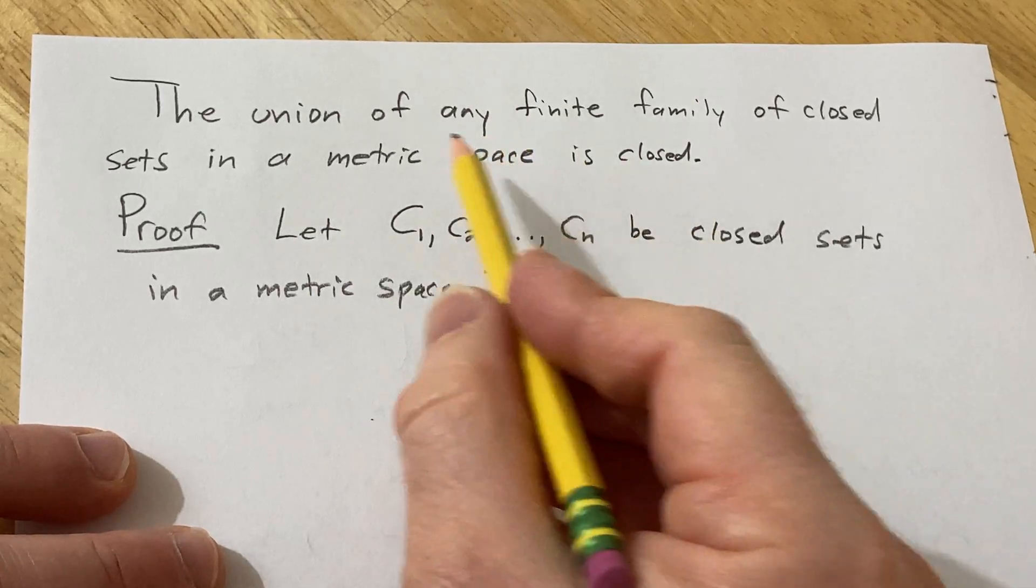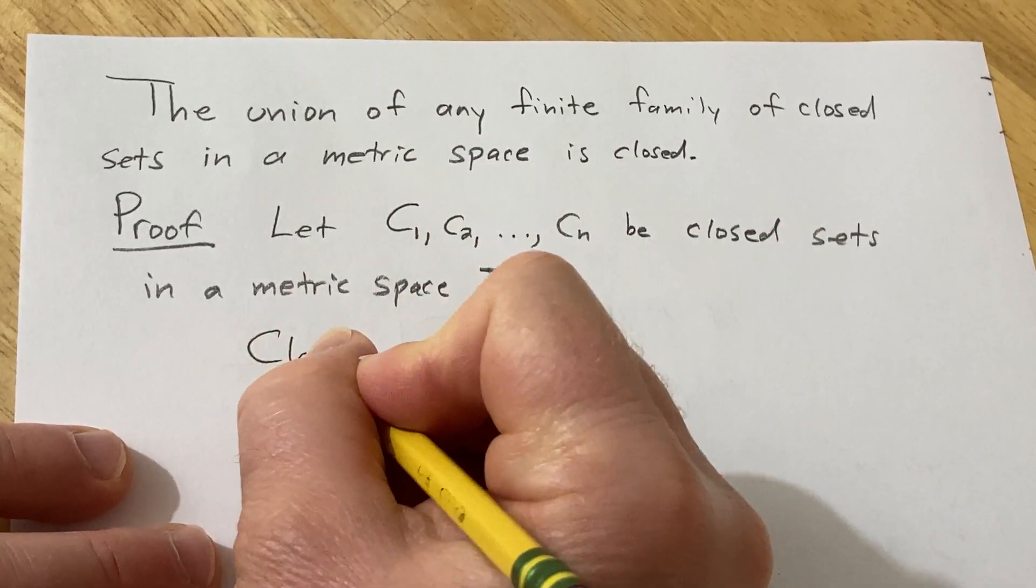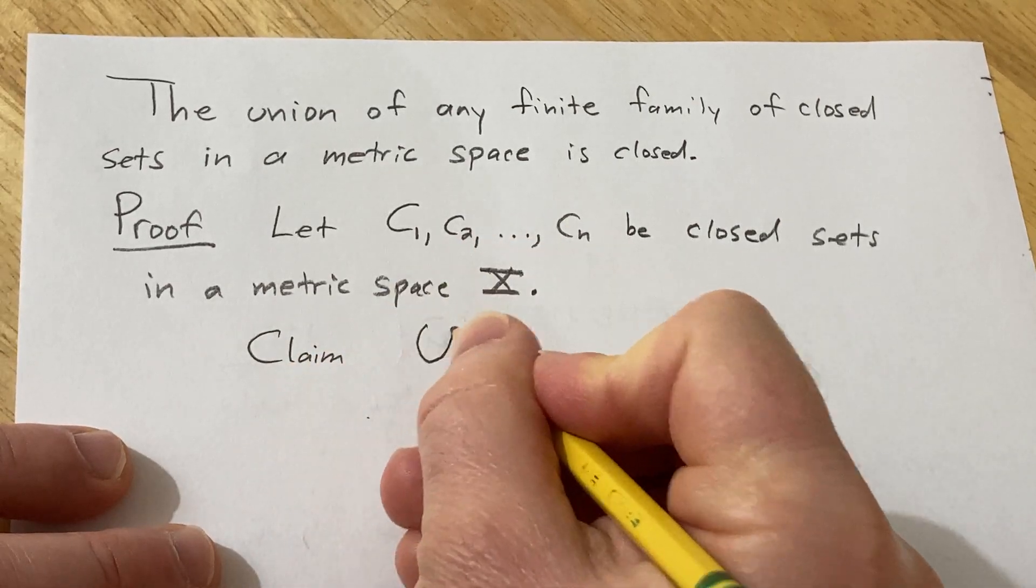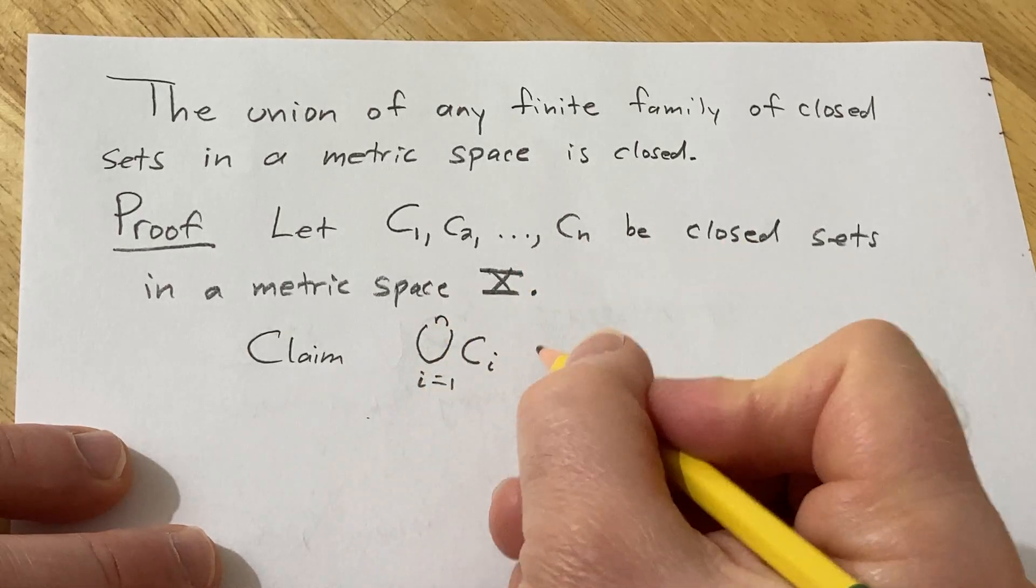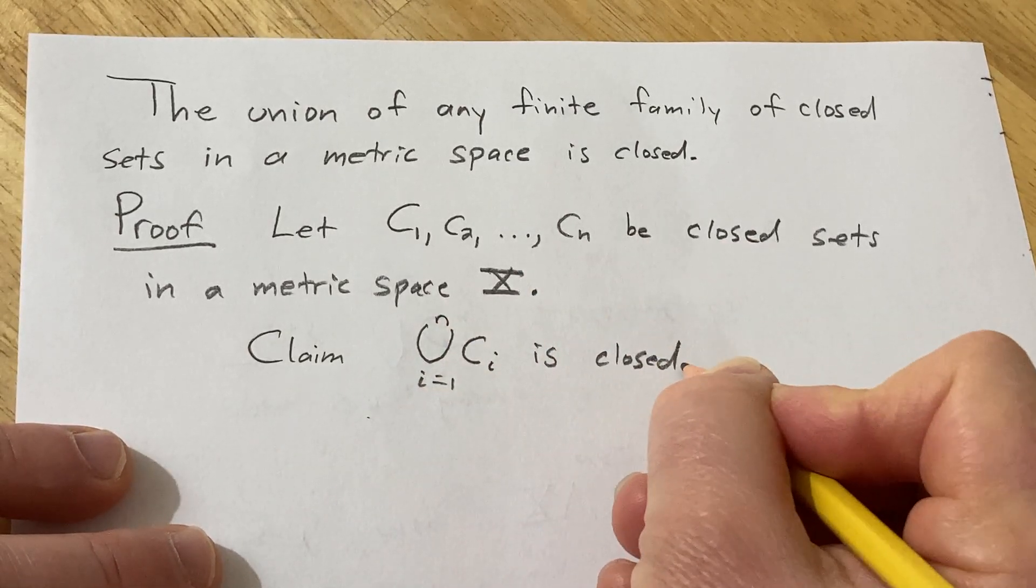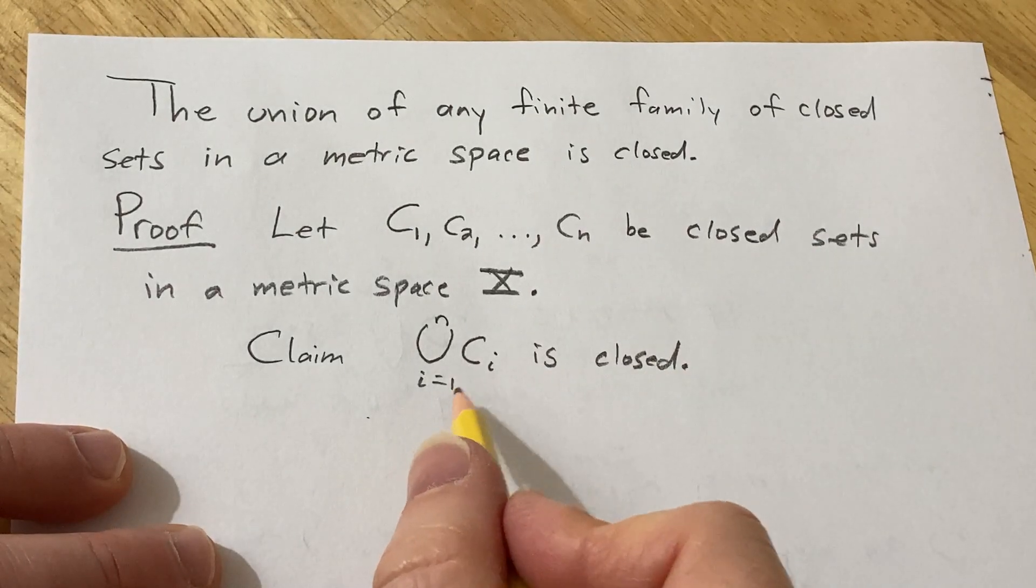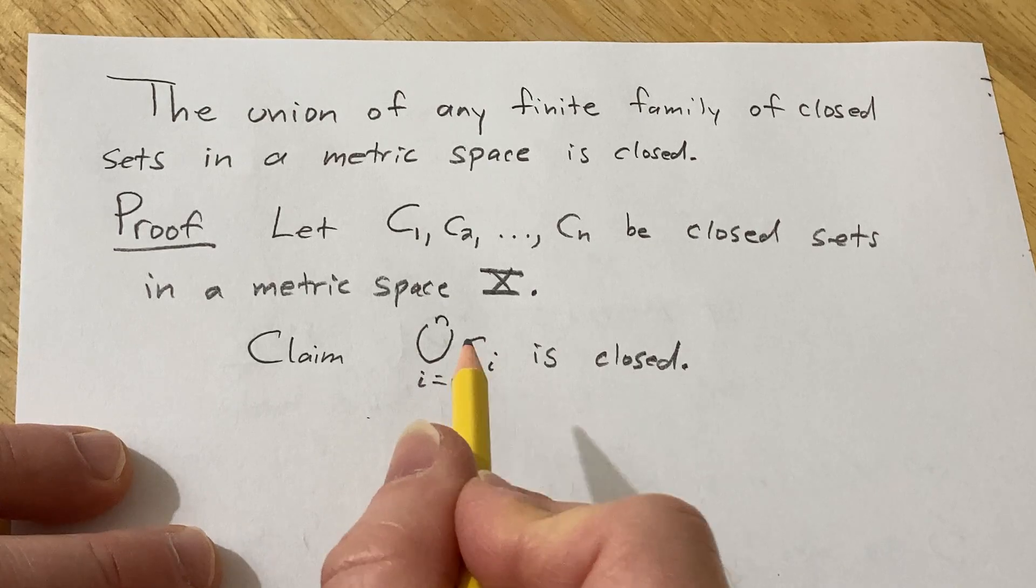And the goal is to show that the union is closed. So claim that the union of these C sub i's as i runs from 1 to n is closed. A set is closed if its complement is open, so all we have to do in this proof is show that the complement of this is open.